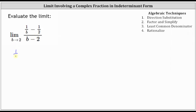Let's rewrite the complex fraction: one divided by b, minus one-half, all divided by the quantity b minus two. We'll begin by subtracting these two fractions in the numerator by obtaining the least common denominator, which is 2b. Multiply the fraction one over b by two in the numerator and denominator, and multiply the fraction one-half by b in the numerator and denominator.